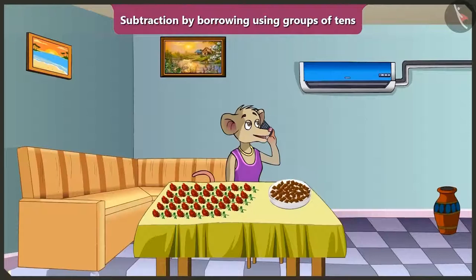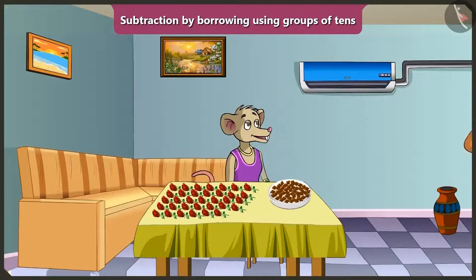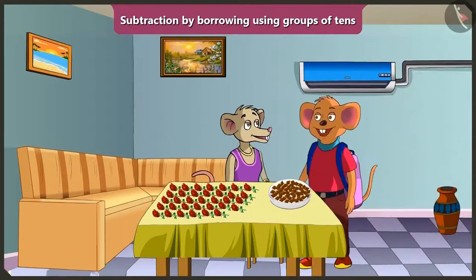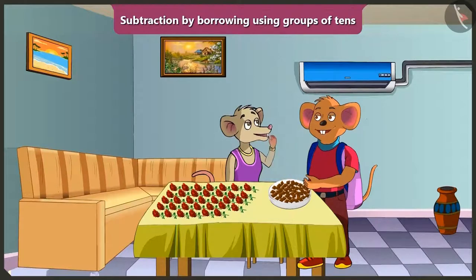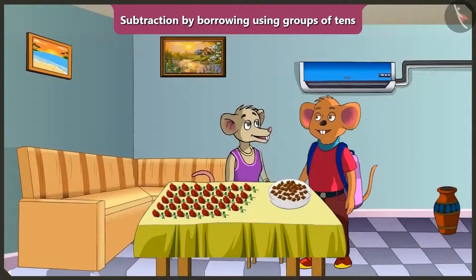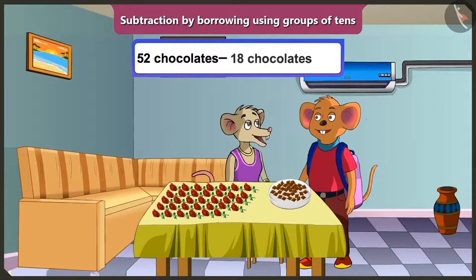Choo-Choo, when are you coming? I have come. Your house is very beautiful. Would you like to eat chocolate? We ate 18 chocolates out of 52. So now how many chocolates are left? I don't know.